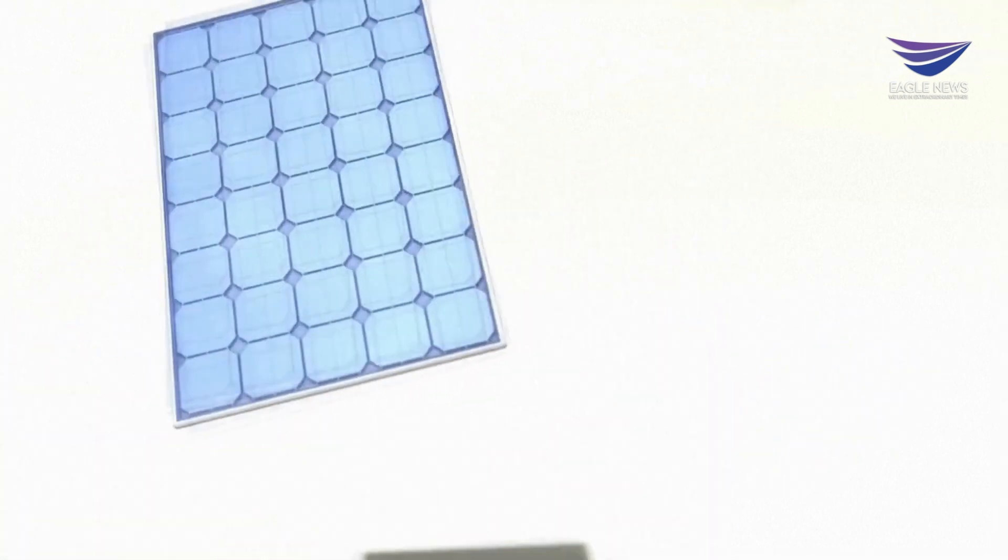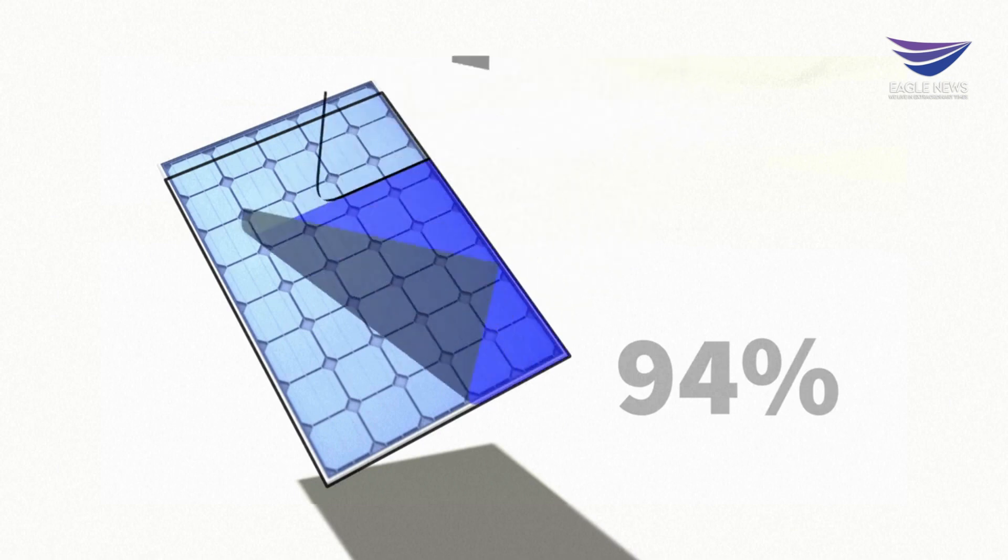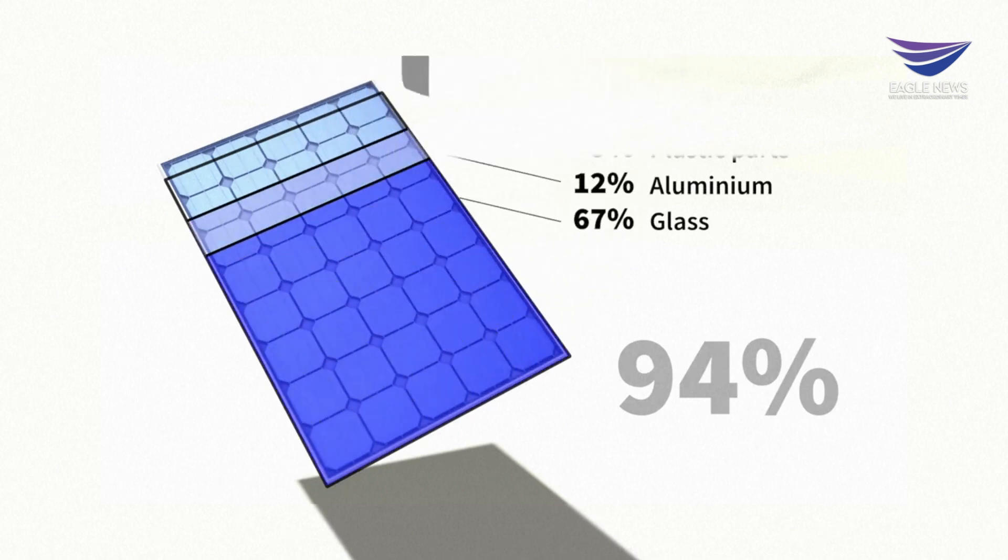Today, 94% of components are recycled, including the aluminum, plastic parts, copper, silver, and crystalline silicon, which can be reused up to four times.